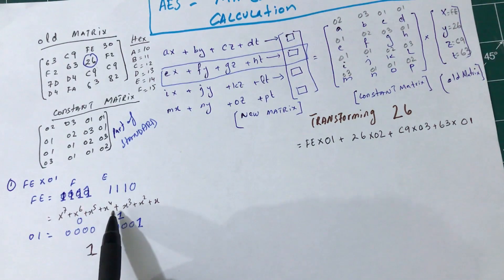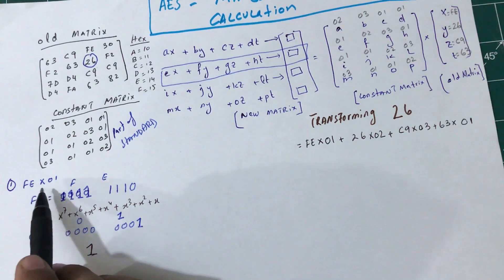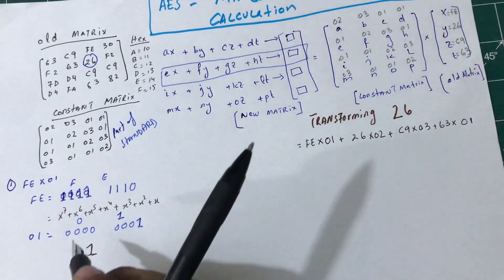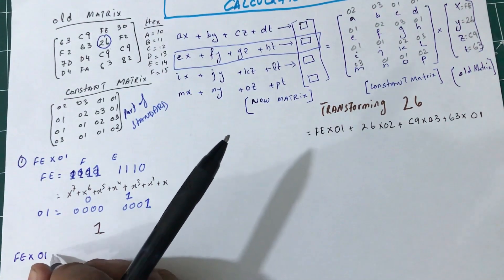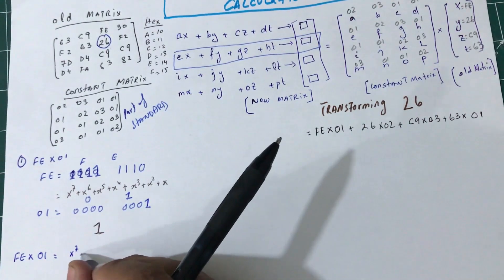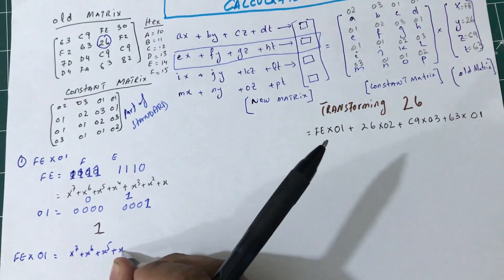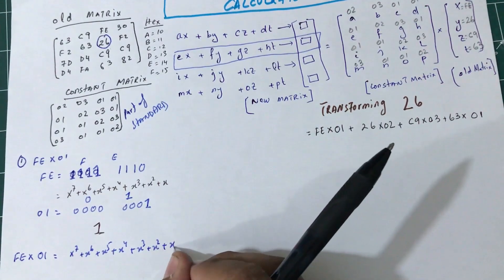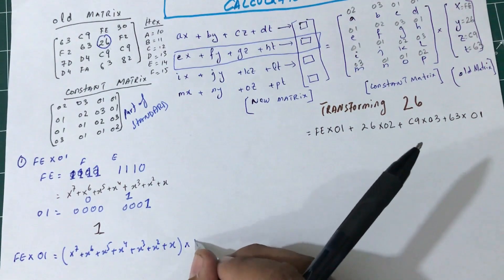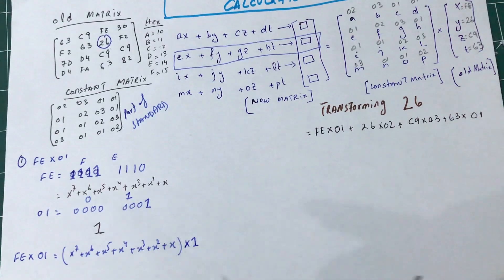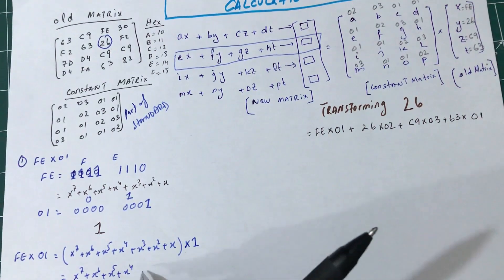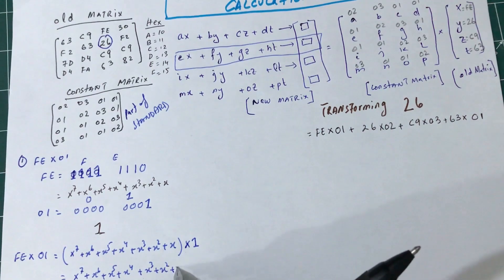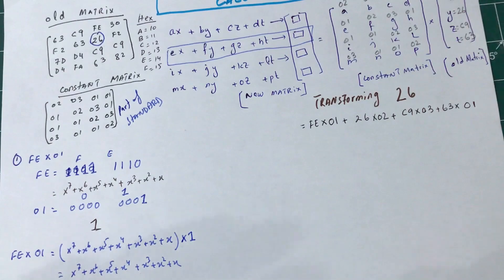Now I have FE and 01 in polynomial form. The next thing I need to do is simply multiply them together. So FE × 01 is: (x⁷ + x⁶ + x⁵ + x⁴ + x³ + x² + x) multiplied by 1. I get exactly the same thing back — the result is FE itself.